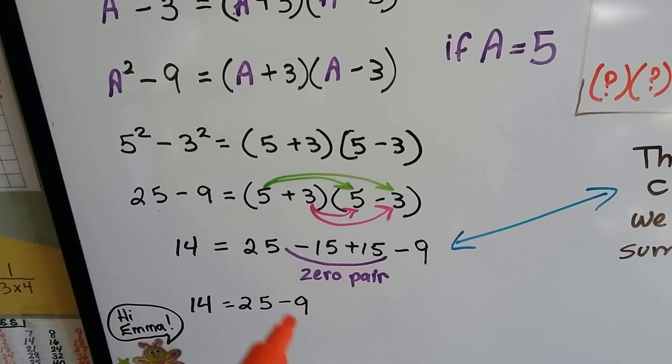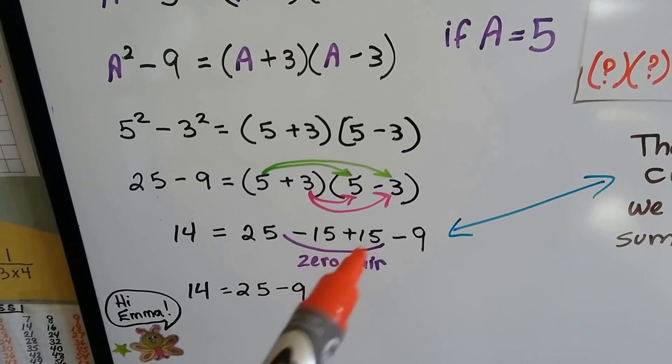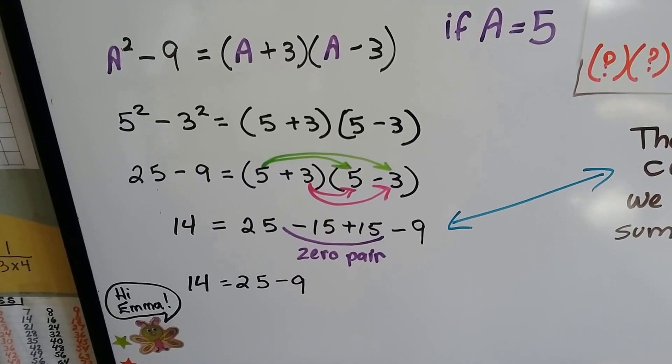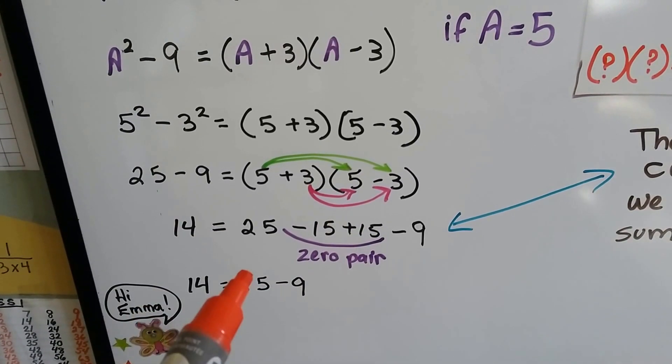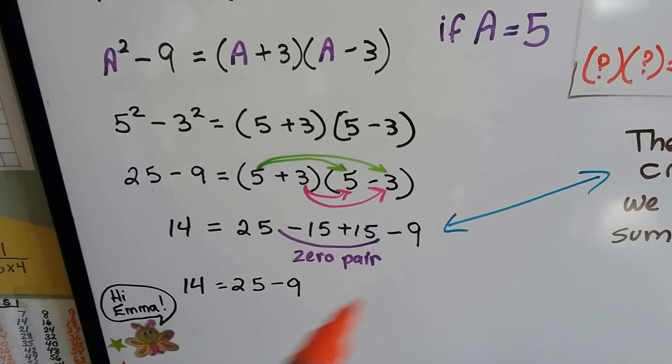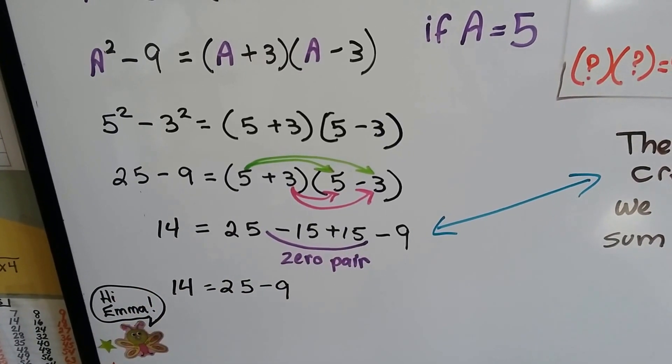The two center ones, the O and the I of the FOIL—First, Outer, Inner, Last—would create a zero pair. They would eliminate each other and cancel out. We'd end up with 25 minus 9, which is 14.